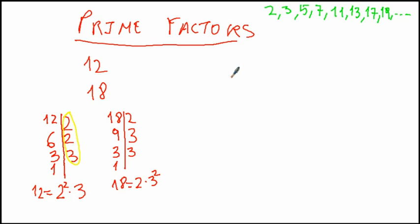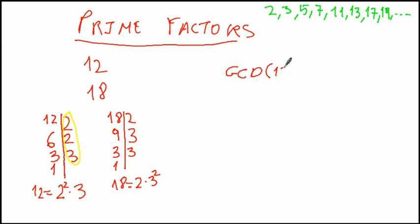Now we can think about another problem: what is the greatest common divisor? That is the biggest of the divisors that 12 and 18 have in common. To find that, we have to look at both numbers.